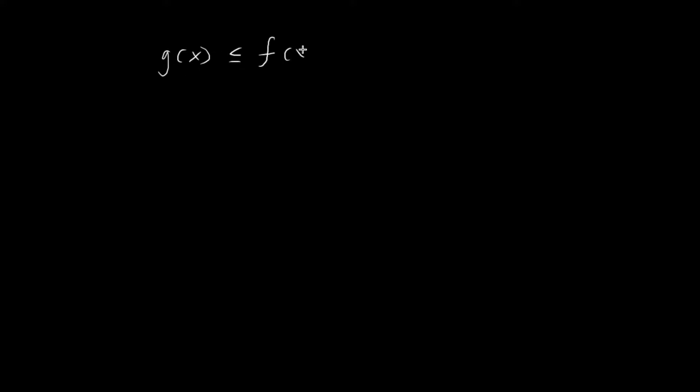So let's say we have three functions. We have a function called g, and then we have a function called f, and then we also have another function called h. And we know that g of x is smaller than or equal to f of x, which is always smaller than or equal to h of x.